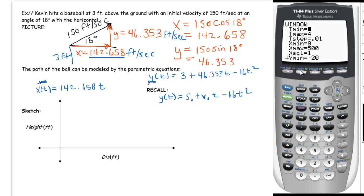Go to your window. Our window, we have to use a little bit of our sense of the world in terms of what we're going to use for our window values. T min should obviously be zero. T max, think a baseball that's hit, how long does it stay in the air? Certainly one second is too short and 20 seconds is unreasonable, so I put four seconds.